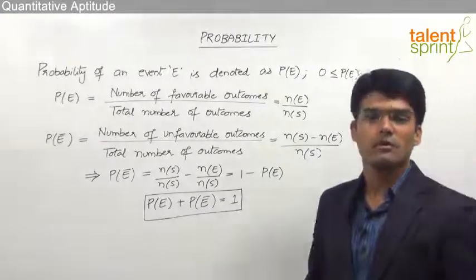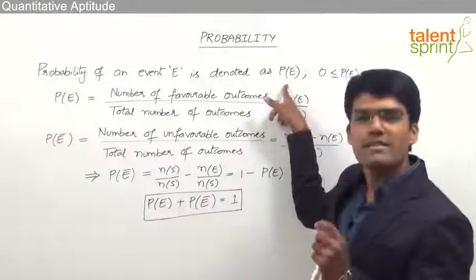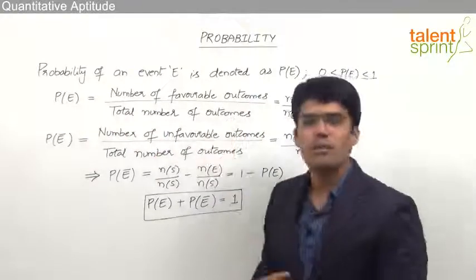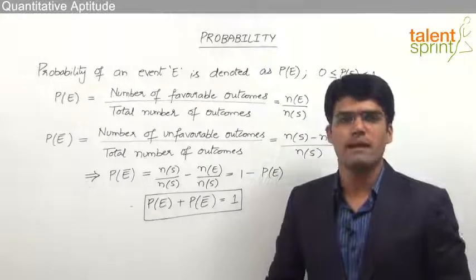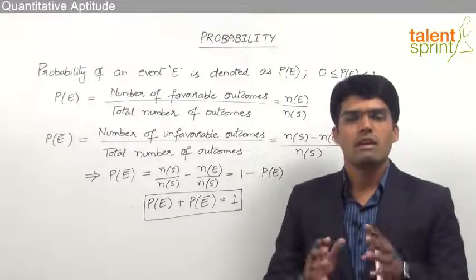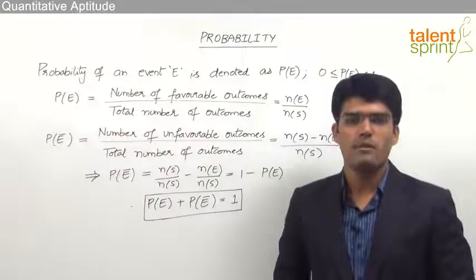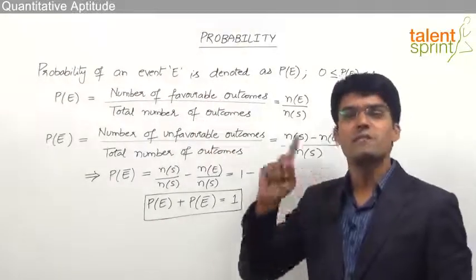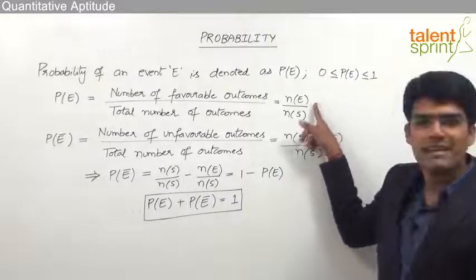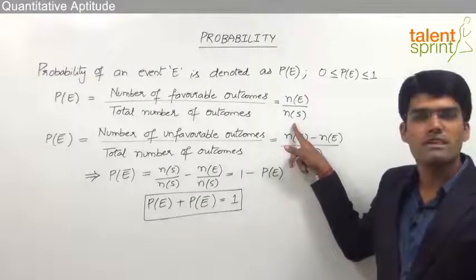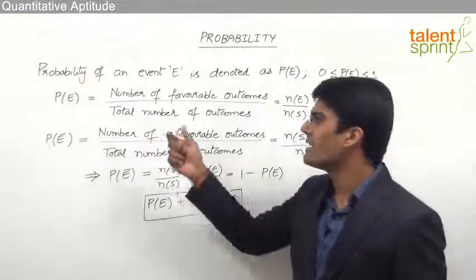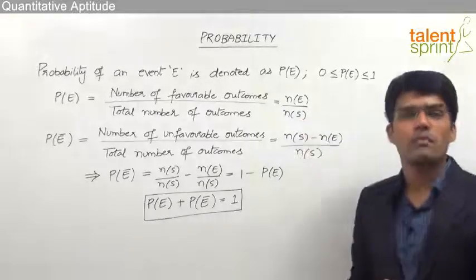Let us now see how to measure the probability of an event. P(E) is equal to the number of favorable outcomes divided by the total number of outcomes. Sample space is the set of all possible outcomes for a random experiment. So out of all those possible outcomes, the probability of a particular event can be taken as N(E) — the number of outcomes in favor of the event — divided by N(S), the total number of outcomes.